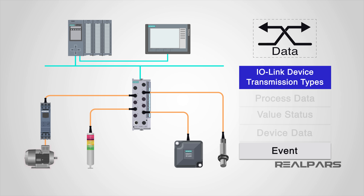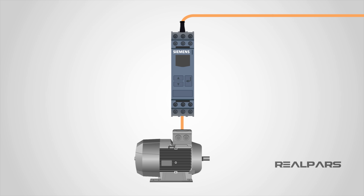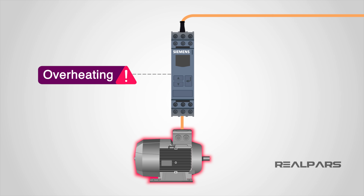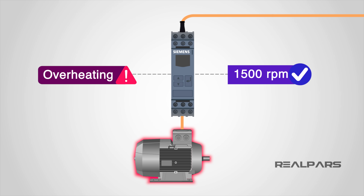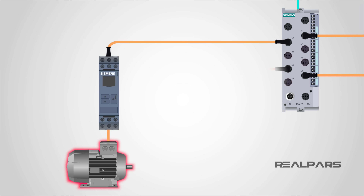A device is able to trigger an event, which in turn signals the presence of an event to the IO-Link master. An example of an event is an error or warning message, such as a short circuit or a device that is overheating. This information can be used to display indicators or messages on HMI devices, such as error messages signaling a wire break or a communication failure, once the IO-Link master has processed the message to the high-level controller. The transmission of device parameters and events occurs independently from the cyclic transmission of process data, so critical messages do not have to queue until already buffered messages are sent.